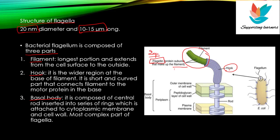The next part is the hook. The hook is slightly wider than the filament and is a short curved structure that connects the filament with the basal body. The third part is the basal body, which is embedded in the cell wall and the plasma membrane. The basal body has two parts: a centrally located rod, and rings attached to it. As you can see in the diagram, this is the most complex structure.